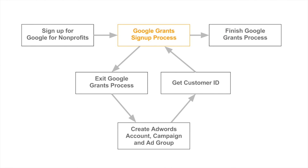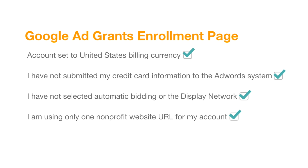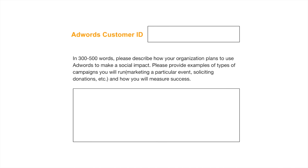Now that you have your customer ID, it's time to go back to the Google Grants signup process and complete it. Remember that tab we told you to leave open? Go back there and complete the enrollment page by checking each of those boxes, then click Next. On the following page, fill out your AdWords customer ID and write a 300 to 500 word description on how you're going to use AdWords for your organization. Once you've done that, you've completed the Google Grants signup process.